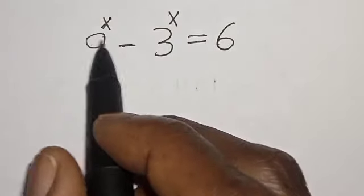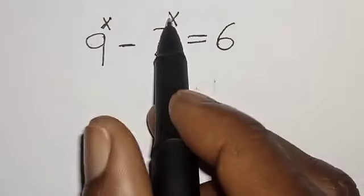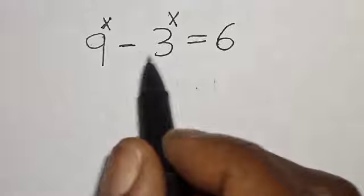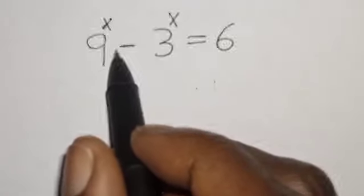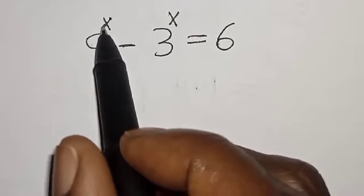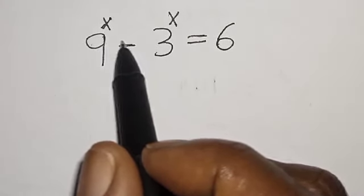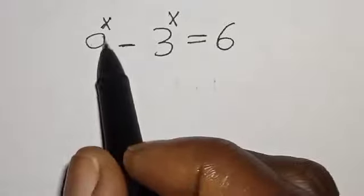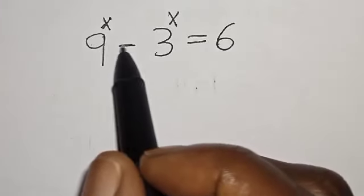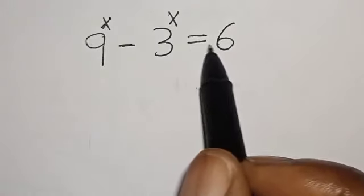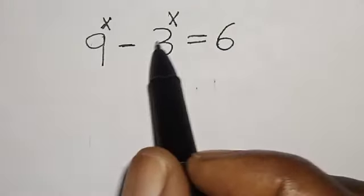9 raised to power x minus 3 raised to power x is equal to 6. Hi everyone, welcome to my class. In this class, we want to find the value of x from this given equation: 9 raised to power x minus 3 raised to power x is equal to 6.